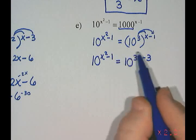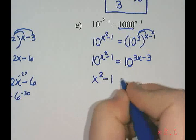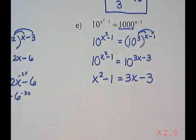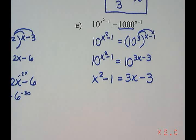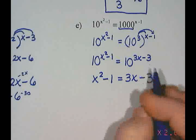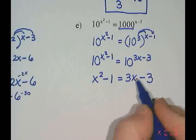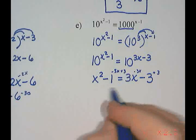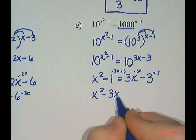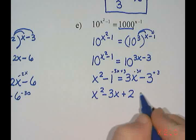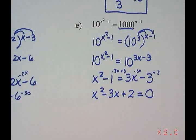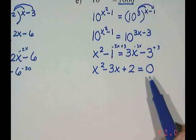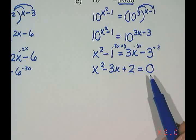Since the bases are the same, the exponents are equal: x squared minus 1 equals 3x minus 3. This is more complicated than the other equations because it has an x squared, so I want to move all terms to one side — just like questions from our previous unit. Subtracting 3x and adding 3 to both sides, I get x squared minus 3x plus 2 equals 0. To solve this I have a choice of the two f's: factoring or the quadratic formula.